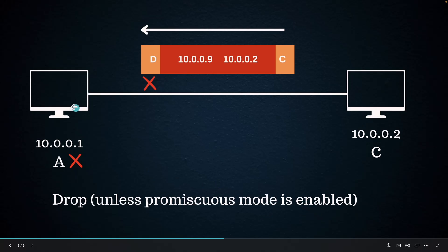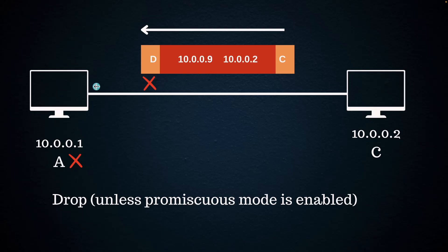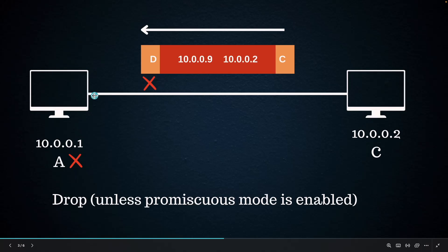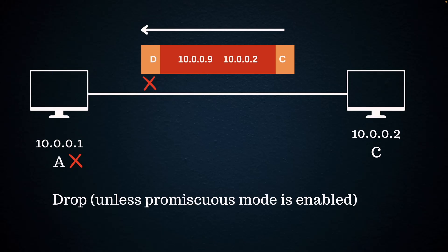There is a mode called promiscuous mode. If you enable this mode, the kernel tells the NIC: 'any frame you receive, forward it to me — even if it's not for you.' This is used when a machine is sniffing all packets, or when you have many virtual machines with many MAC addresses. None of them may match the physical MAC address, but one of them might match a virtual one, so the hypervisor says 'send it all to me and I'll handle the filtering.' There is an additional cost to this.